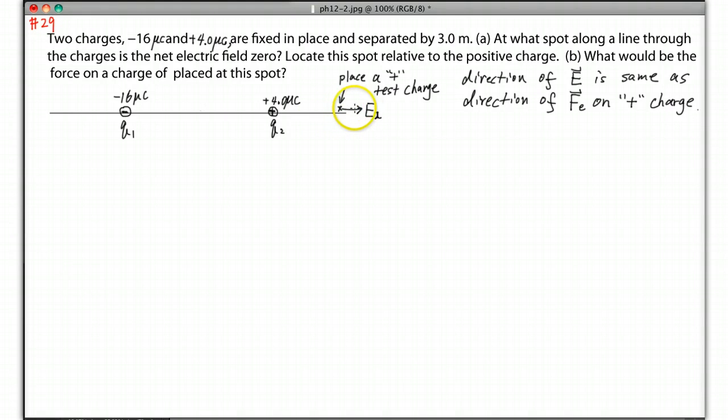So E2 should be going this way. That's exactly the direction of the supposed electric force from Q2. But the electric force from Q1 should be this direction, so we label E1.